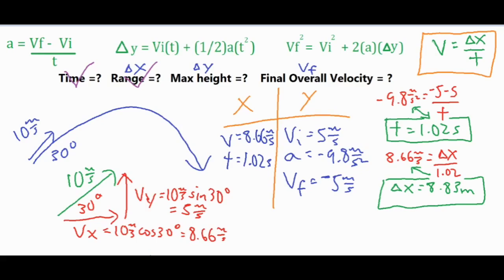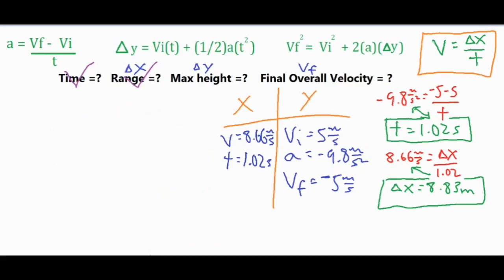For our maximum height, we can do this one of two ways. If our total time in the air is 1.02 seconds and we split it in half, we get 0.51 seconds, which is the time it takes to rise or fall. We can use that to find our maximum height, or we can use a Vf of zero meters per second because at the very peak in the y direction it's not rising. You could use the second formula and plug in the time of 0.51, or use the third formula with Vf of zero. I'm going to use the second one.